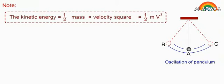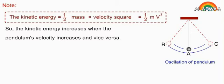Note: The kinetic energy equals half mass times velocity squared (½mv²). The kinetic energy increases when the pendulum's velocity increases and vice versa.